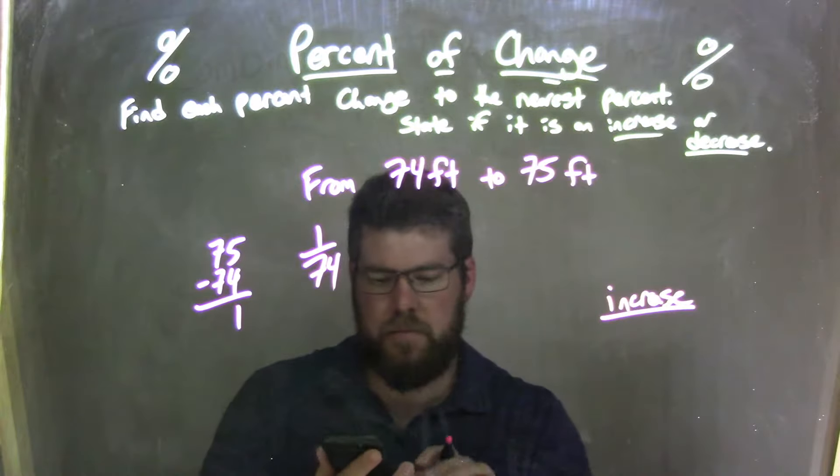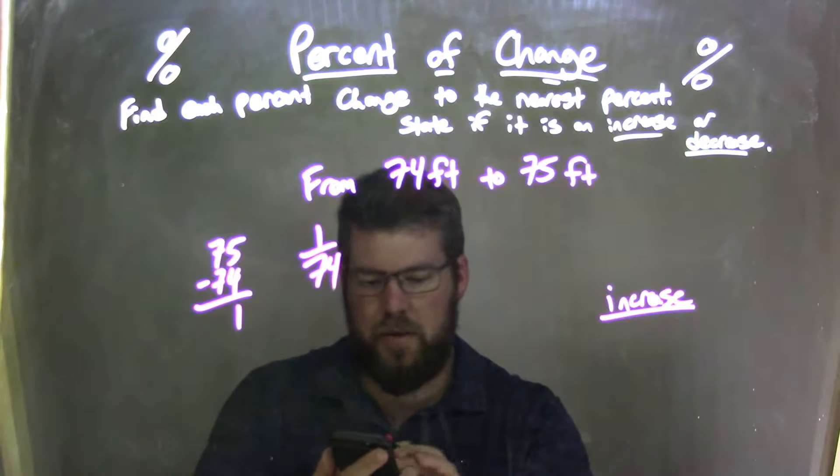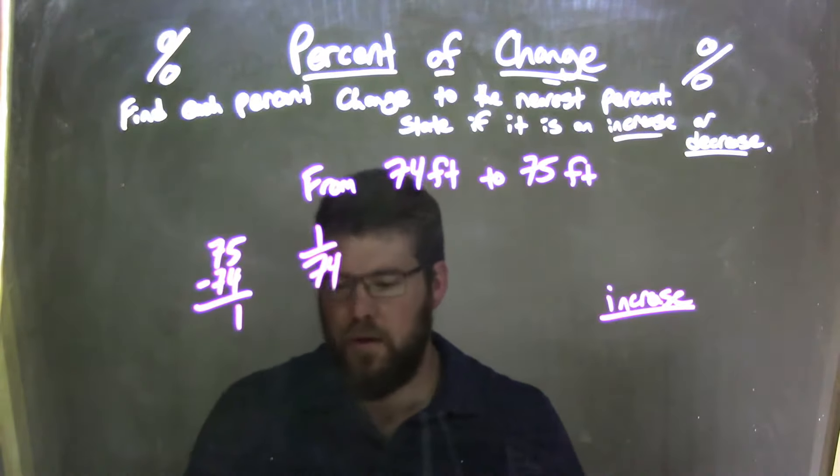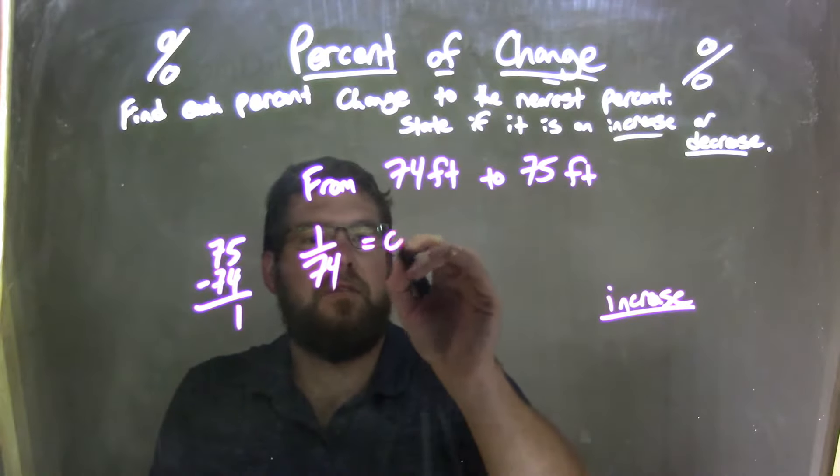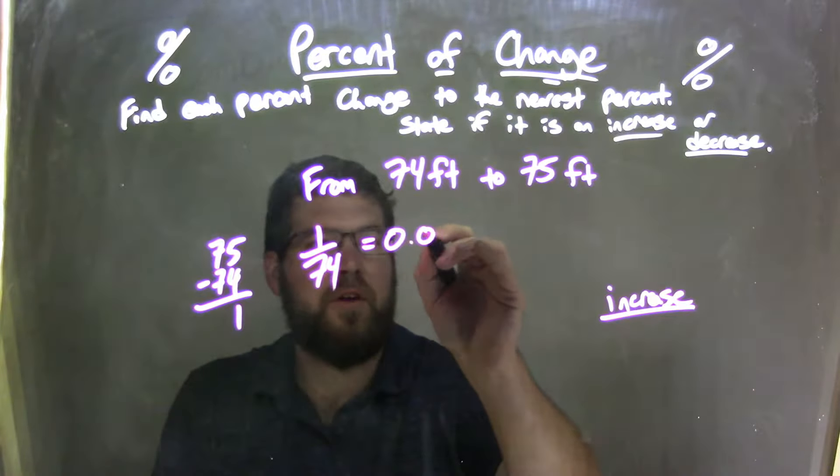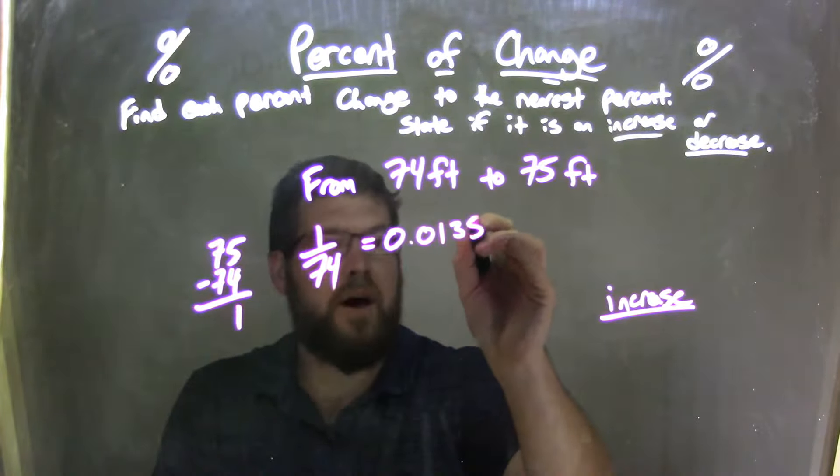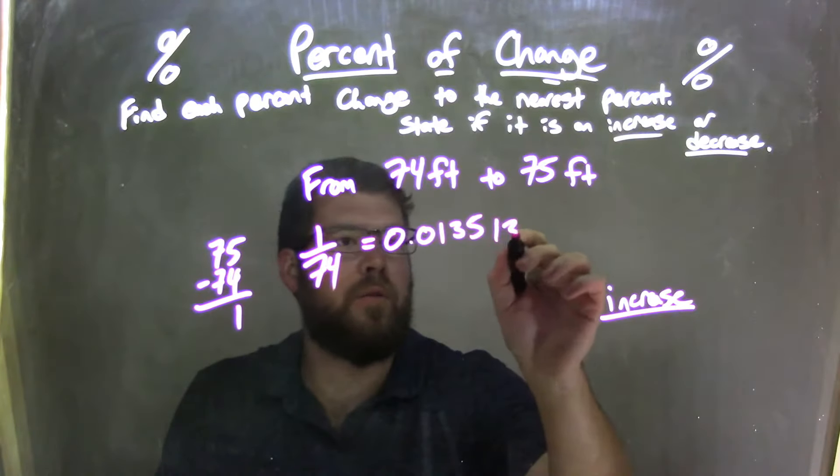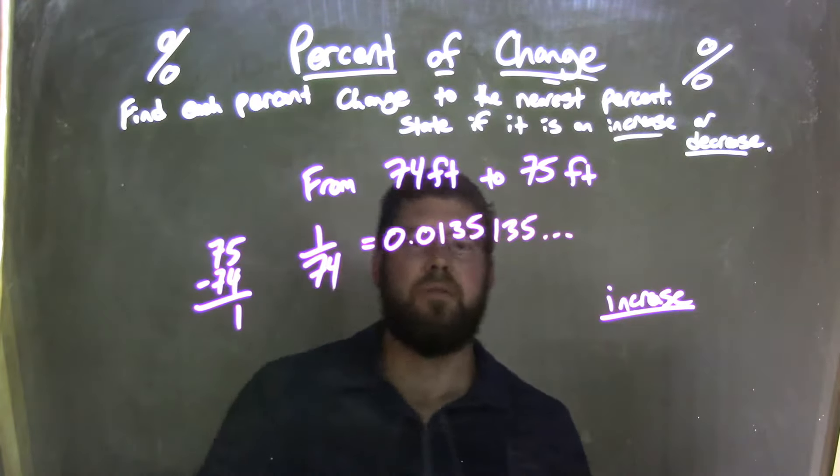I use my calculator here. 1 divided by 74 comes out to be 0.0135 and then it repeats. 1, 3, 5, forever, okay?